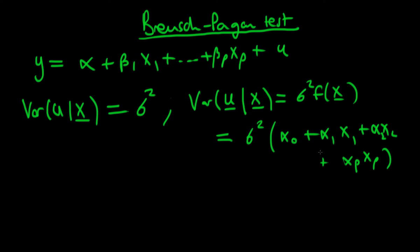Also, under heteroskedasticity it turns out that the standard errors which statistical software programs report are actually wrong — they're biased — so we would need to correct for that. That's why it's so important to test for heteroskedasticity.